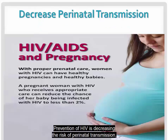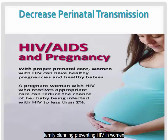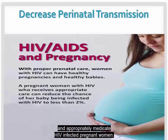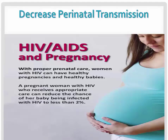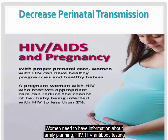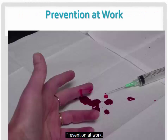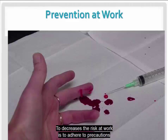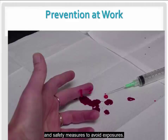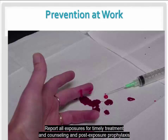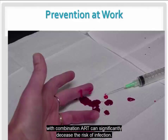Prevention of HIV includes decreasing the risk of perinatal transmission through family planning, preventing HIV in women, and appropriately medicating HIV-infected pregnant women. Women need to have information about family planning, HIV, HIV antibody testing, and antiretroviral therapy if infected. To decrease the risk at work, adhere to precautions and safety measures to avoid exposures, report all exposures for timely treatment and counseling, and note that post-exposure prophylaxis with combination antiretroviral therapy can significantly decrease the risk of infection.